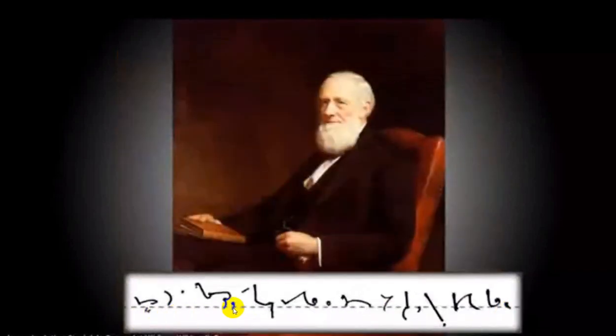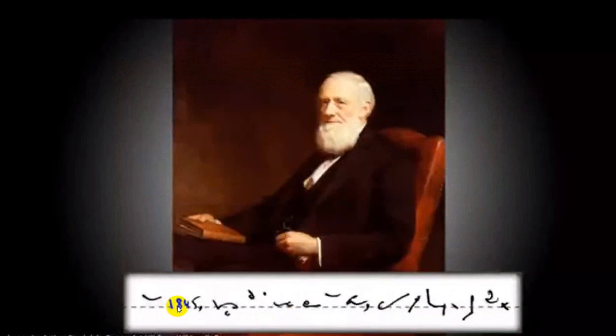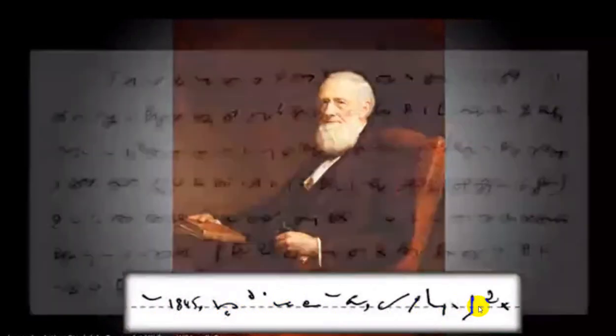Pitman was a perfectionist and continued to revise his system until his death, publishing 12 editions. In 1845, Pitman opened a new school in London, where he continued to teach shorthand.